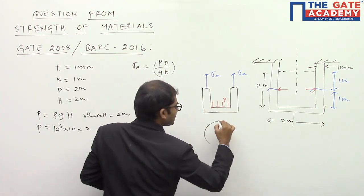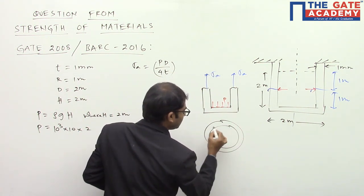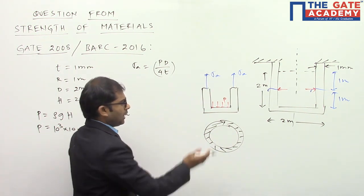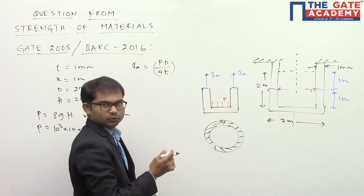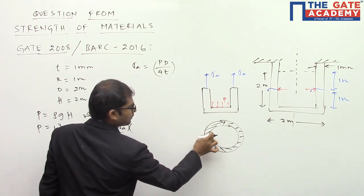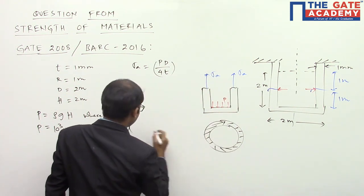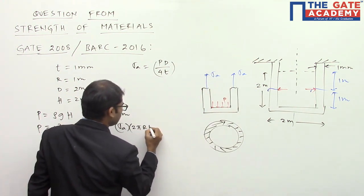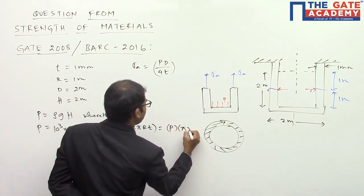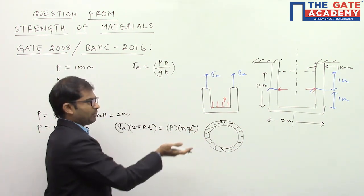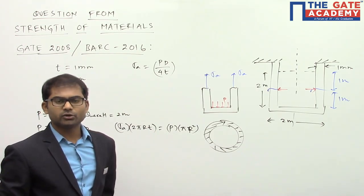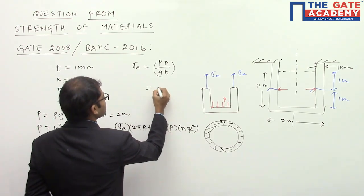σa acts on the cross-sectional area of the cylinder wall. For equilibrium, upward force equals downward force: σa × (2πr × t) = p × πr². From this we get σa = pr / (2t), which is equivalent to pd / (4t). So the axial stress formula is confirmed by equilibrium.